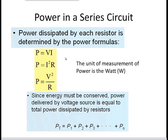Now we want to calculate the power in a series circuit. To do so I'm going to use the power formulas. In general, the power formulas are: power equals voltage times current; power equals current squared times resistance; or power equals voltage squared divided by resistance. And because energy must be conserved, the circuit's total power PT is equal to the power dissipated by component one plus the power dissipated by component two, and so on through the nth element in the circuit. The unit of measurement of power is the watt.